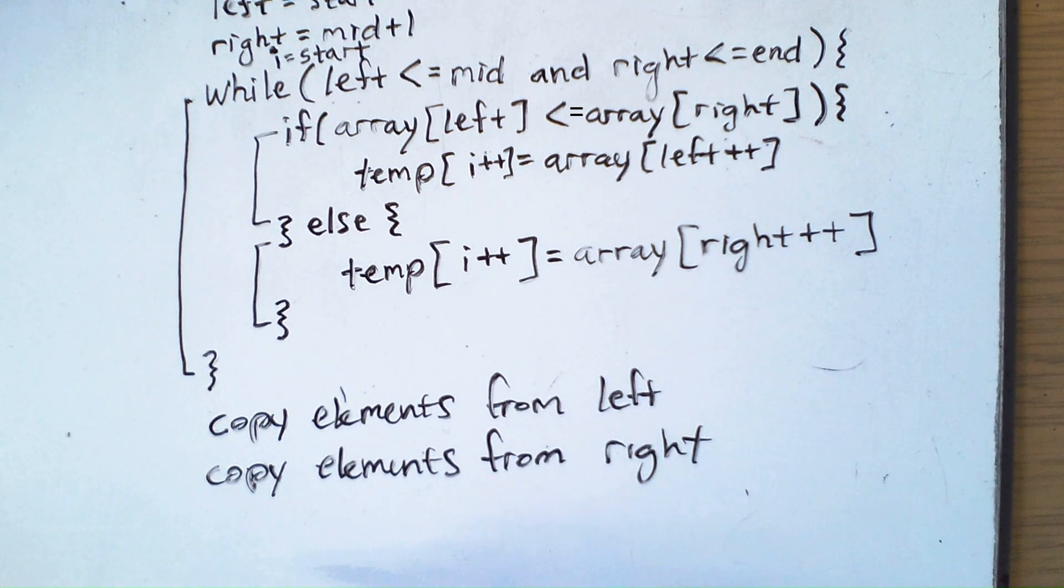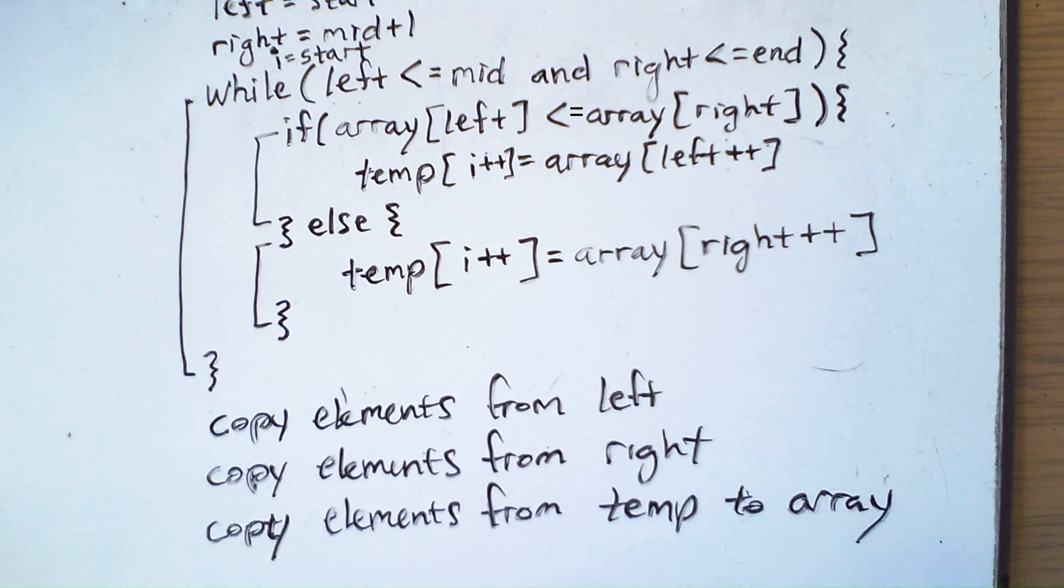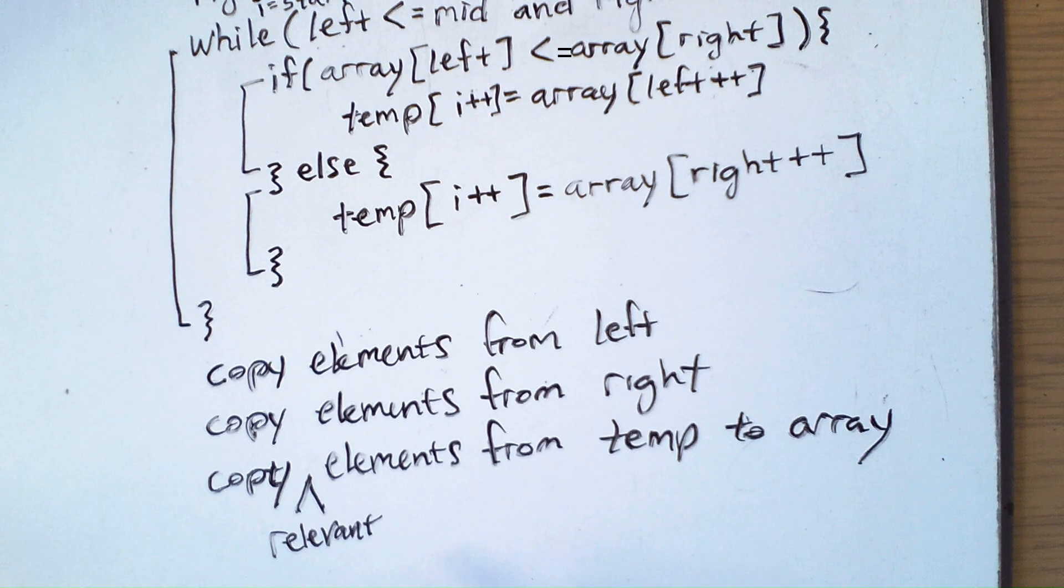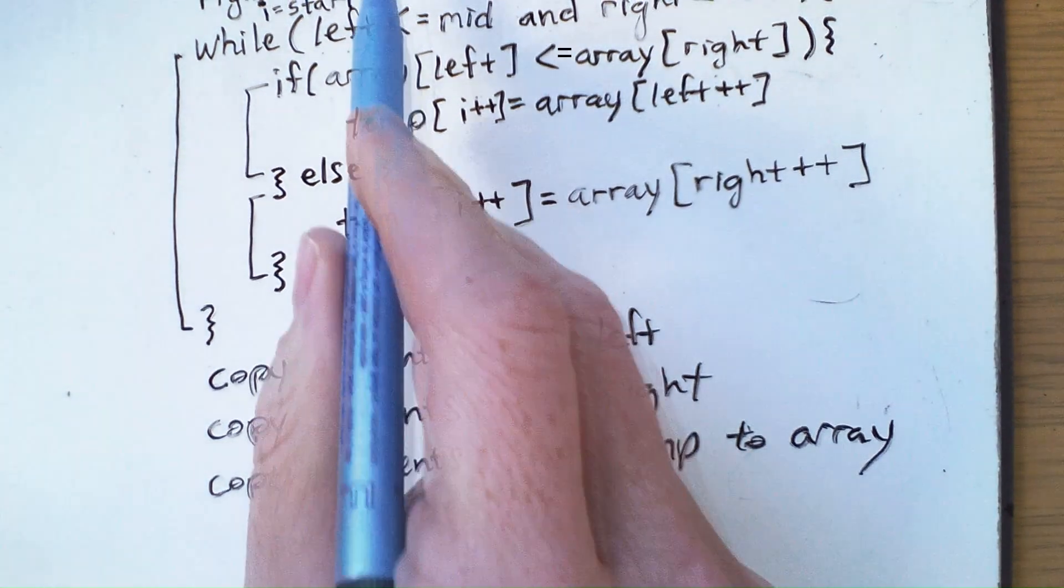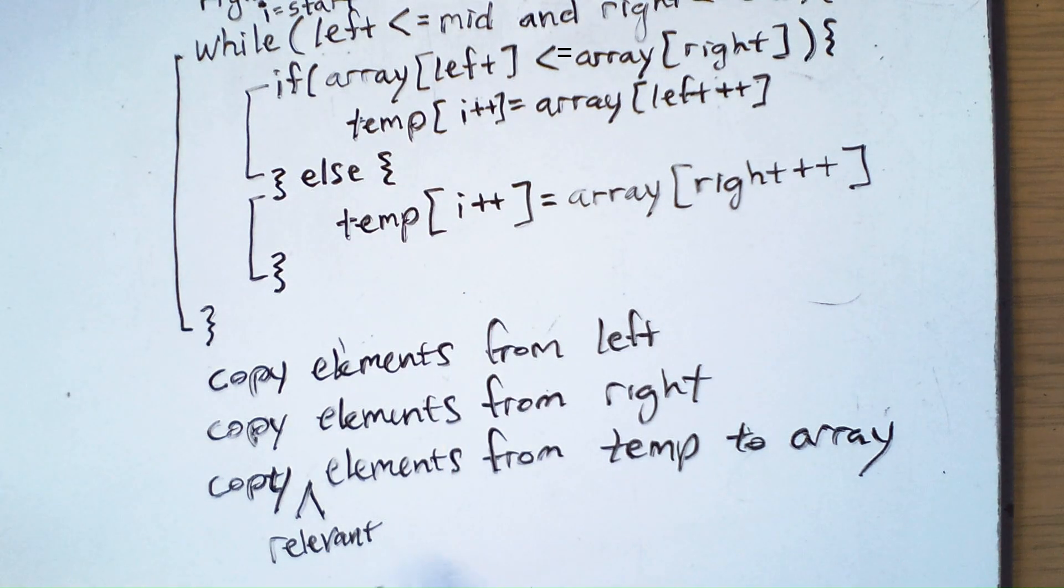What do we do at the end? We copy all the elements from the temp array back to the original array. Now I said all the elements, but really we only copy the relevant elements. So we've only been messing with elements in the range from start to end. And so those are the ones we're going to copy from temp back to the array. And then once we've done that, we're done.